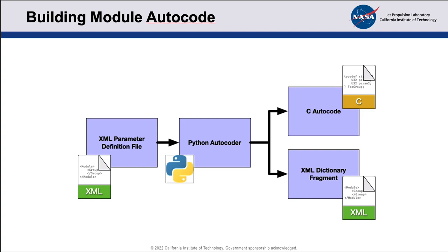The XML dictionary fragment defines the module's contribution to the parameter dictionary. The dictionary is created late in our build process — once all modules have created their fragments, another process merges those fragments together to create the overall dictionary. The dictionary is delivered as a flight software deliverable during our release process and is used by our ground tools to decode data products, generate commands, and a few other tasks. It defines the full set of parameters available in flight software, their ranges, their constraints, so that operators on the ground know what they can work with.